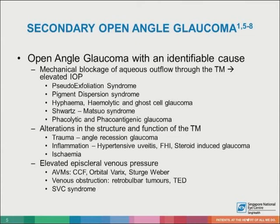Alterations in the structure and function of the trabecular meshwork also lead to open angle glaucoma. For example, angle recession glaucoma post-trauma, ischemia, and in inflammatory conditions such as hypertensive uveitis, Fuchs heterochromic iridocyclitis, and steroid-induced glaucoma.